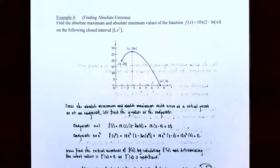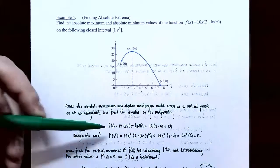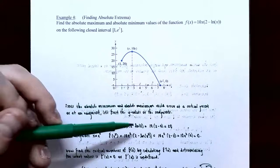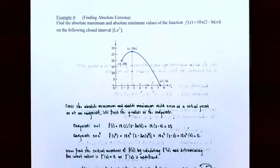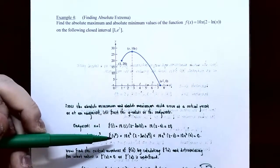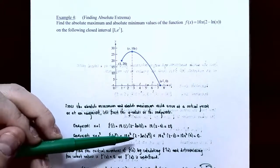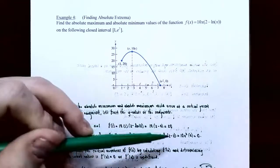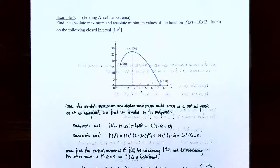Let's find the y-values at the endpoints. At x = 1, plugging into the original function gives 10(1)(2 − ln 1). Since ln 1 = 0, this is 10(1)(2 − 0) = 20. So the y-value is 20 at x = 1. Now checking the other endpoint: at x = e², we get 10(e²)(2 − ln e²). Since ln e² = 2, this becomes 10(e²)(2 − 2) = 10(e²)(0) = 0. So the y-value is 0 at the right endpoint x = e².